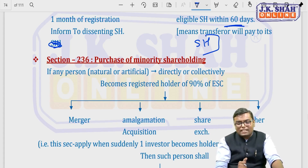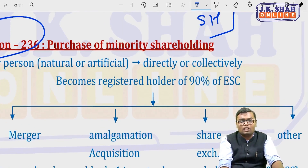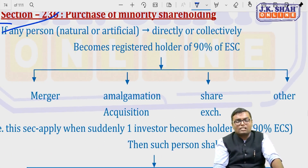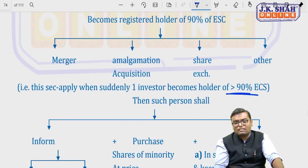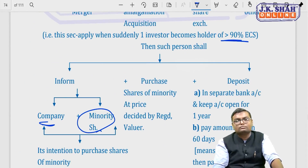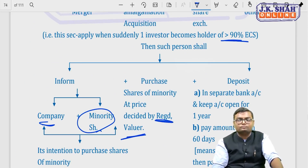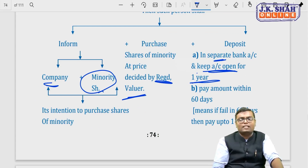Under section 236, if any person becomes holder of more than 90% of equity share capital due to any reason — merger, amalgamation, share exchange — they must inform the company and minority shareholders of their intention to purchase the shares. The purchase price is decided by a registered valuer. Once the scheme is approved, the total payment is deposited in a separate bank account kept open for one year, so remaining shareholders can still accept and receive payment. Once they accept, payment must be made within 60 days.